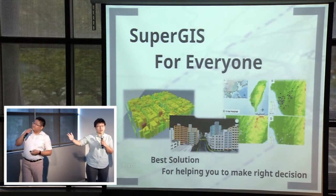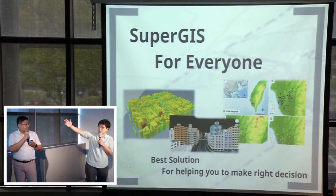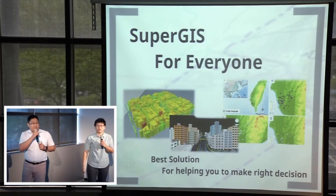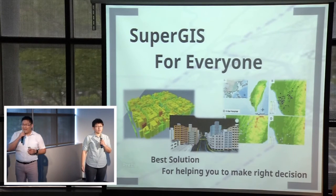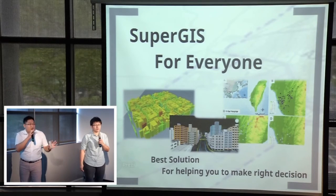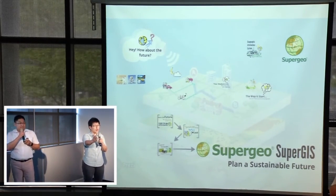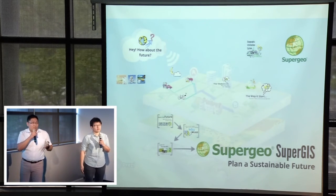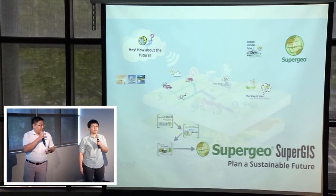As you can see, SuperGeo provides a total GIS solution from 2D to 3D so that you can understand your country, your city, and just the road in front of your house — even to find a parking space easily. We provide the best solution to help people make the right decisions. SuperGeo is here to provide you with GIS solutions to plan a sustainable future. Thank you.